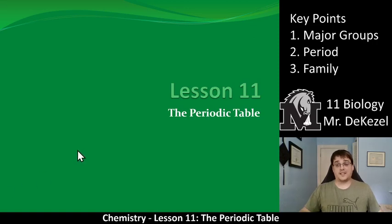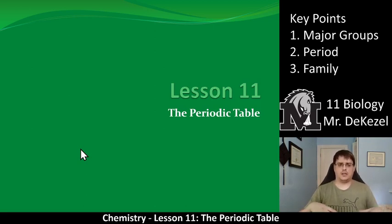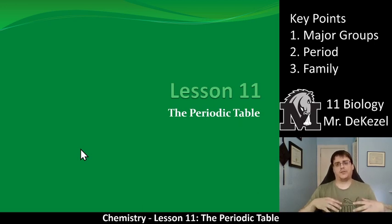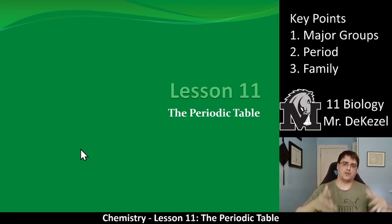Hello grade 9 science class, welcome back to another lecture. As you can see, this is lesson 11 titled the periodic table. We are going to build off of what we talked about at the end of the last lesson in the board diagrams lesson. We are going to talk about how the different rows, which go side to side, and the columns that go up and down, have similar properties.